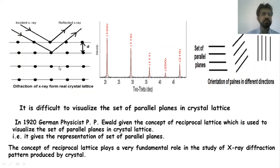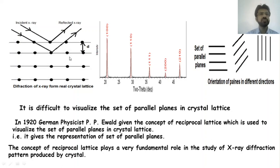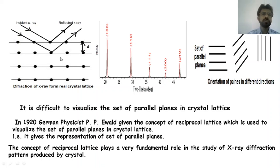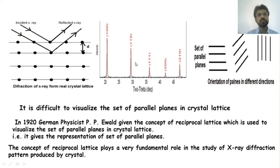The X-ray diffraction from any crystalline material will be studied in detail about the Bragg X-ray diffraction in the next chapter. Consider these crystalline planes which are parallel with each other. If X-rays are incident on these atomic planes, the rays will be diffracted. Bragg observed that from this X-ray diffraction, plotting the graph of intensity versus theta gives information about the orientation of the planes and the interplanar distance between the planes.